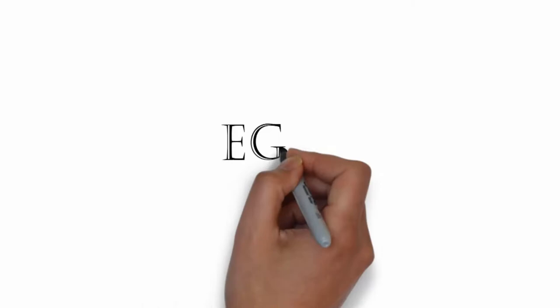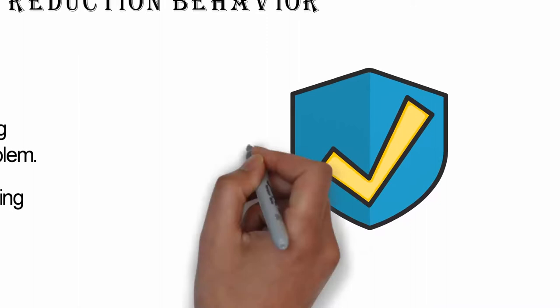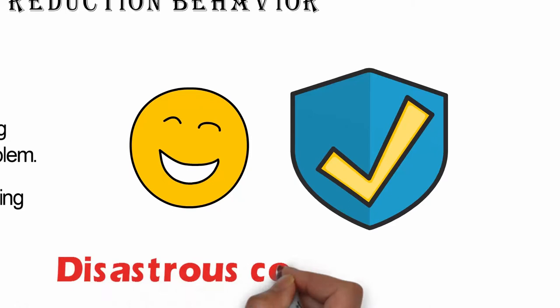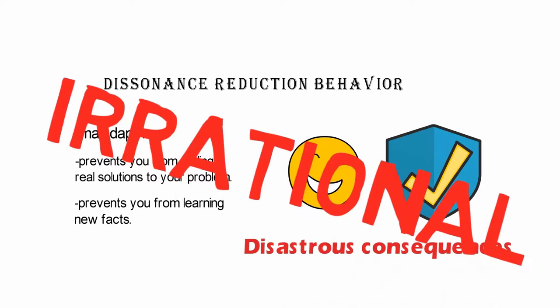In other words, there's your ego and the dissonance reduction behavior protects your ego. To basically keep you happy and satisfied and keep you smiling, but this can have disastrous consequences. Because what happens is you become irrational. And when you become irrational, you go straight back to fantasy land.